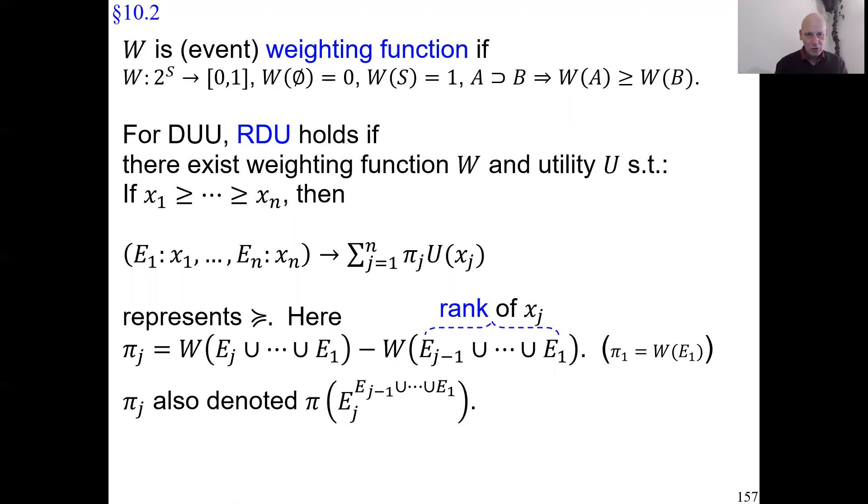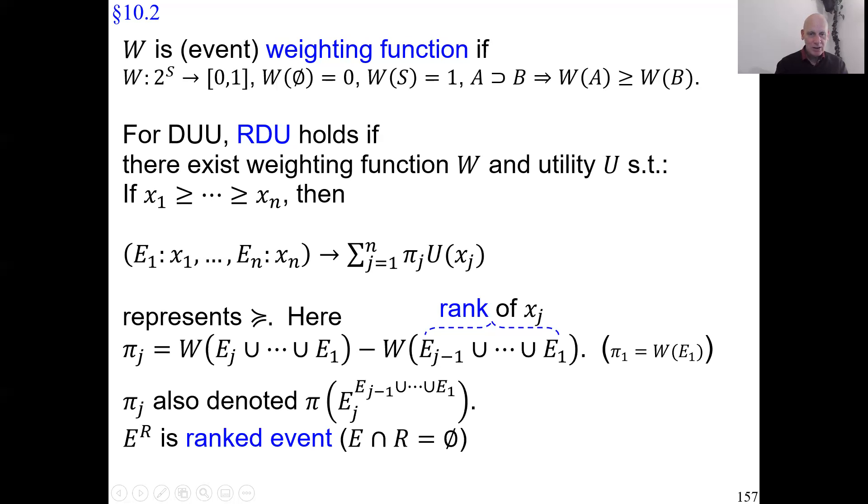And then notation, also completely analogous to risk. That decision weight is often denoted in this manner. I put an event here, another event as a superscript. So this pair of events, let me already say it. If I have a pair of events where I write one as a superscript, I call that a ranked event. They should be disjoint. Having in mind one is the outcome event, the other is the rank. And then the decision weight is the marginal W contribution of the outcome event to the rank.